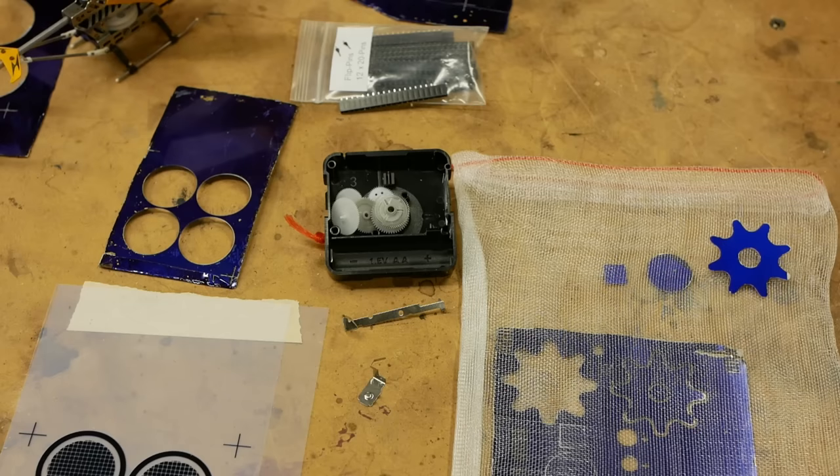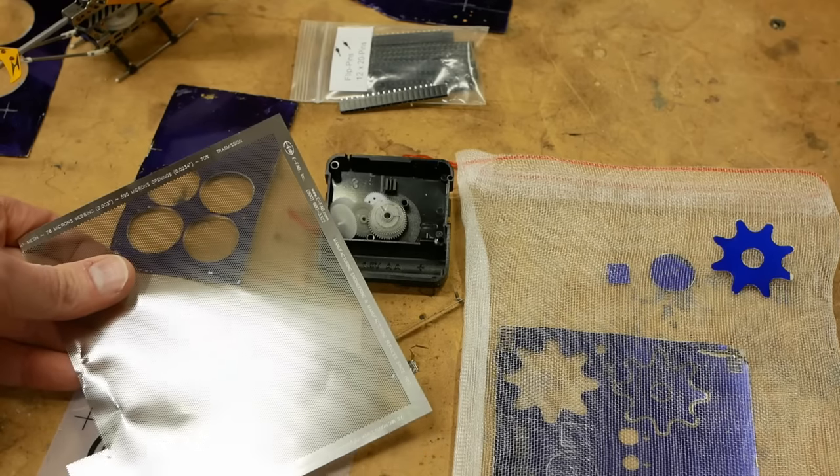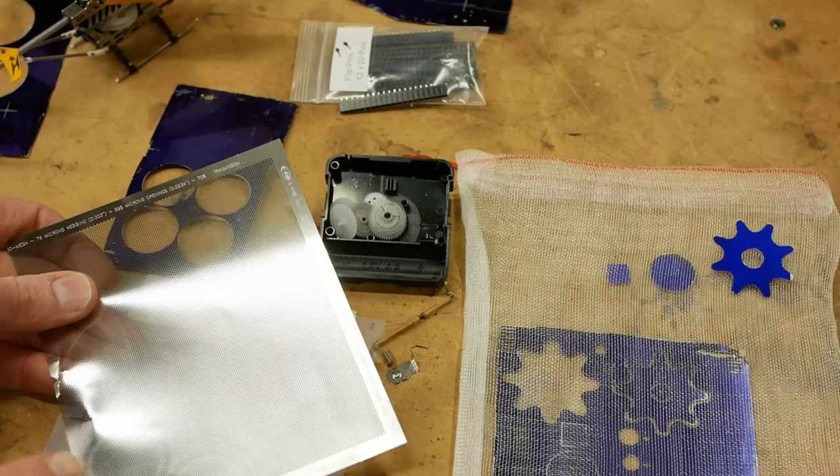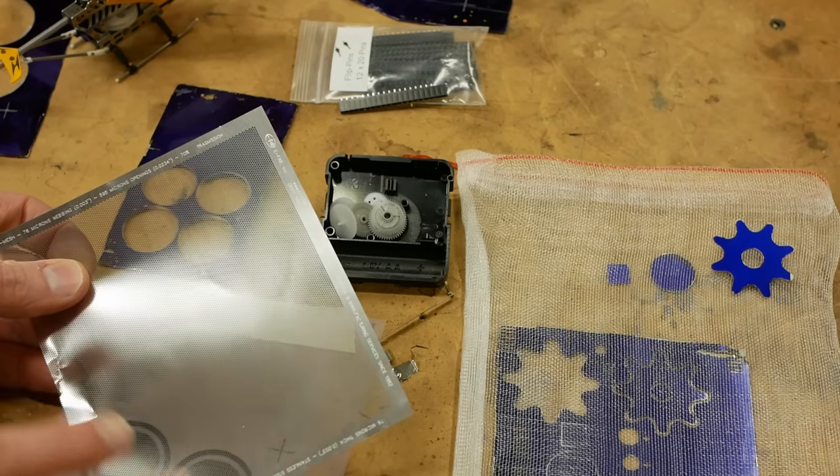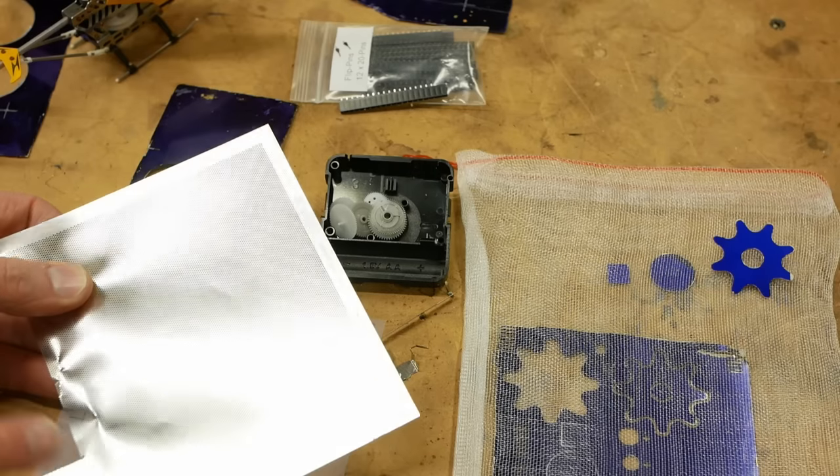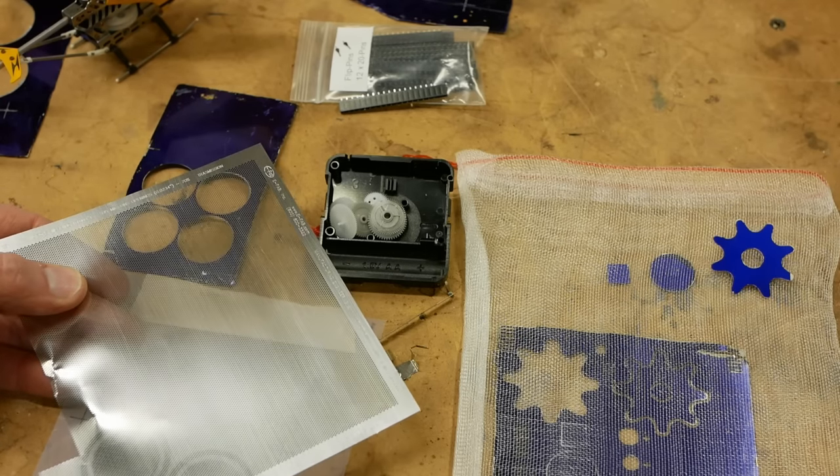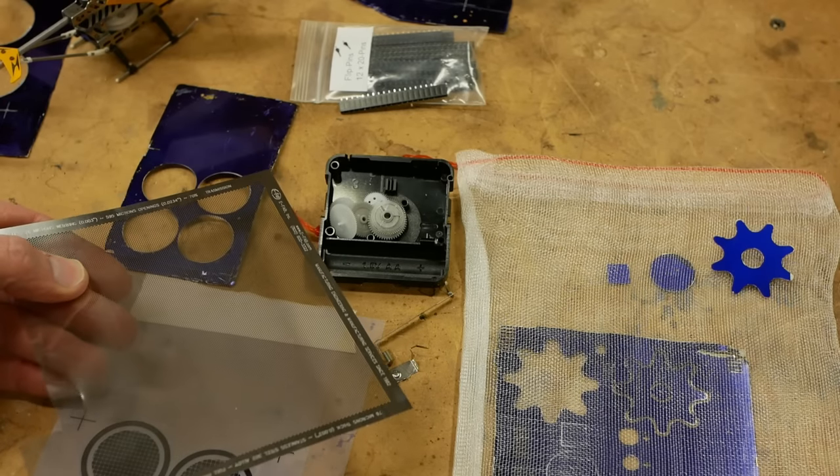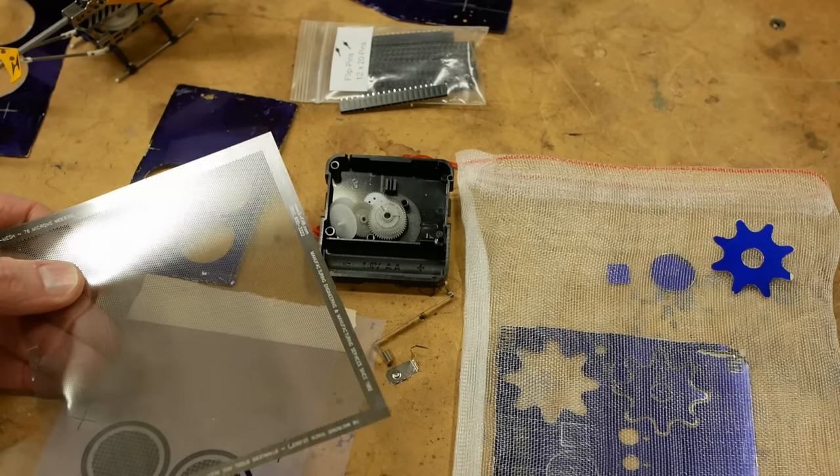However, there are some things that you just can't make even with a die. Like for example, this custom mesh - if your project requires a custom mesh size or a custom opacity here, the only way to make this is pretty much photochemical etching because you can't stamp this out and you can't laser cut it and you definitely can't waterjet cut it.